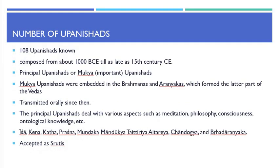There are about 108 Upanishads known, which were composed from 1000 BCE till as late as the 15th century CE. Of these, the first dozen or so are known as the principal Upanishads or Mukhyaya, meaning important Upanishads. These Mukhyaya Upanishads were embedded in the Brahmanas and Aranyakas, which formed the later part of the Vedas, and have been transmitted orally since then.